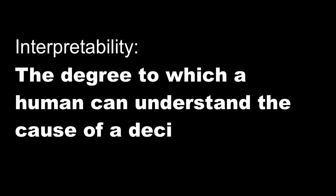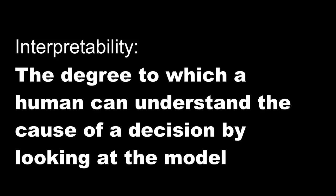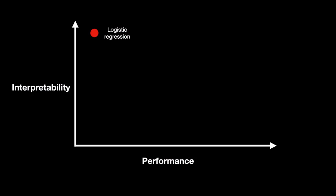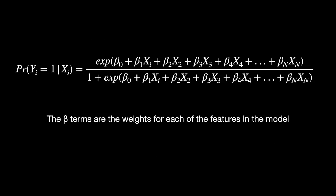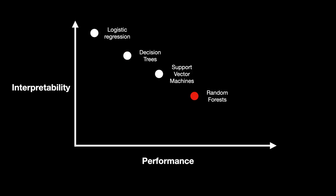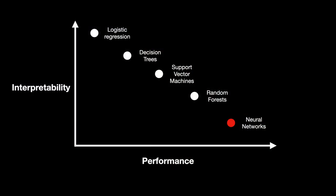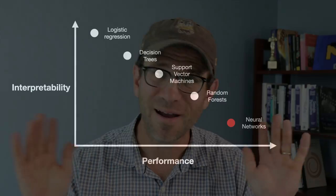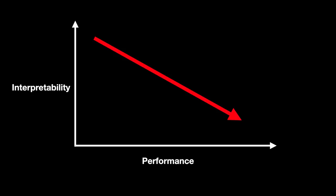Interpretability can be defined as the degree to which a human could understand the cause of a decision by looking at the model. Logistic regression models are highly interpretable because it's easy to directly extract the coefficients — the weights for each parameter. Random forest models aren't super interpretable because the forest is literally a collection of hundreds or thousands of trees used to make classifications, then aggregated together. Neural networks are highly non-interpretable — you might think of them as a black box. There's a general trade-off between performance and interpretability.